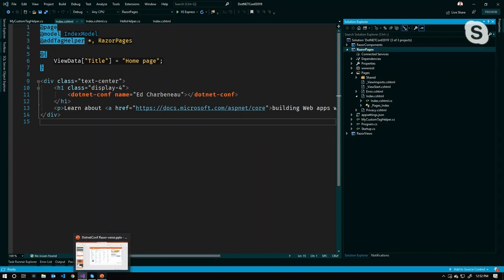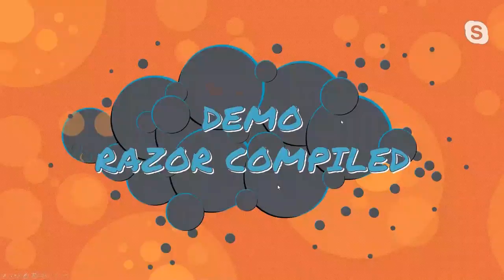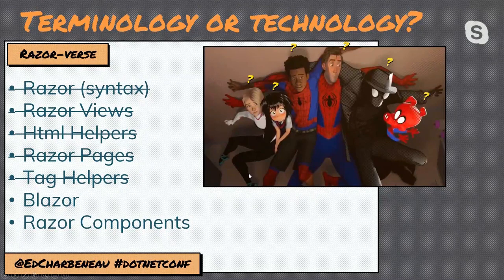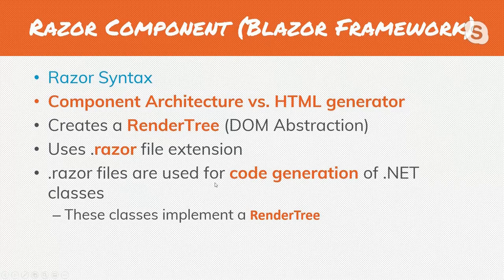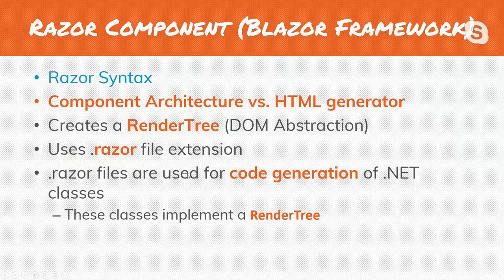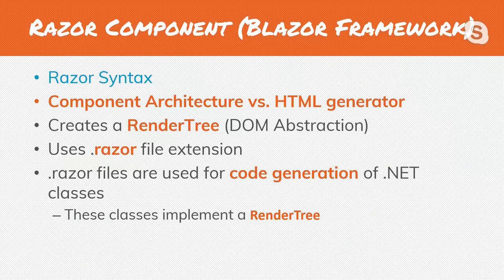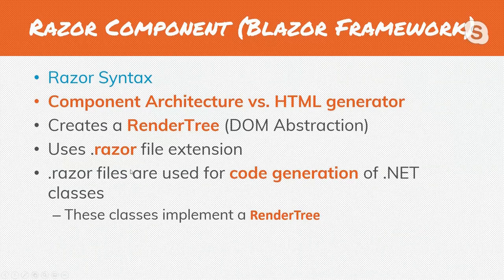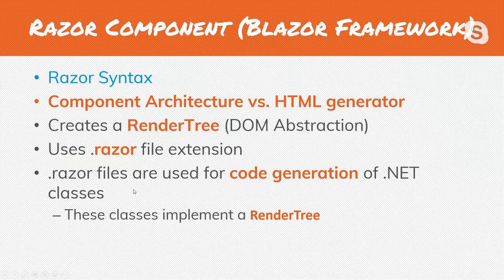Next we're talking about Blazor. Blazor brings with it Razor components — the component system for the Blazor framework. It can still be used in ASP.NET projects, but keep in mind the Razor component model came from the Blazor framework. Blazor and Razor components use Razor syntax but are a component architecture rather than HTML generation tools. They create what is called a render tree, which is a DOM abstraction. Their file extension is .razor versus .cshtml, and the .razor files are used for code generation creating special .NET classes that implement a render tree.